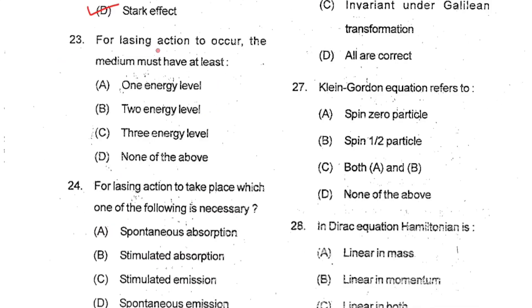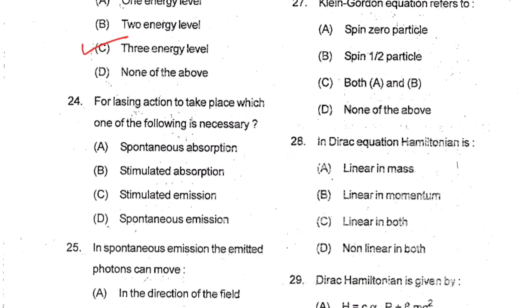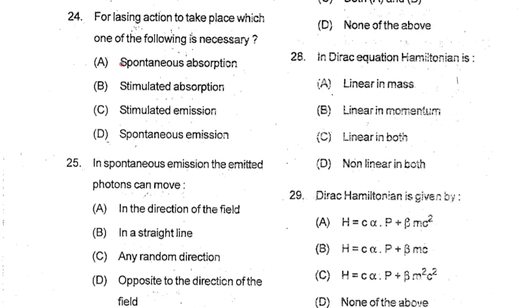Question 23: For lasing action to occur, the medium must have at least three energy levels. So C is your correct option. Question 24: For lasing action to take place, which one of the following is necessary? This is stimulated emission. So C is your correct option.